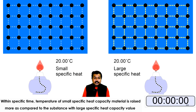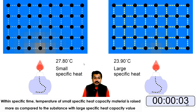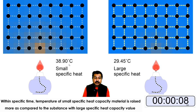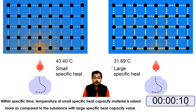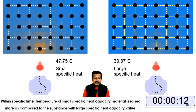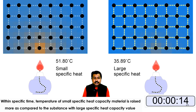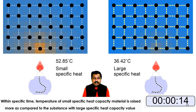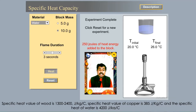Let's run the simulation and check what happens with the small and large specific heat substances. You can observe the small specific heat substance raises in temperature more quickly than the large specific heat substance. Within this small interval of time, the small specific heat substance reached 52.85°C whereas the large one is only 36.42°C.